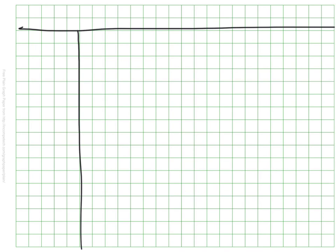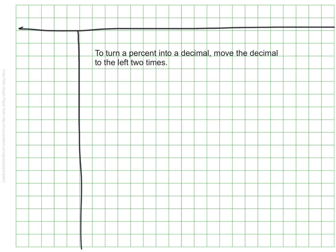Since we are talking about converting between decimals and percents, we'll make sure we can do it in the opposite direction — turning a percent into a decimal. To turn a percent into a decimal, we go the opposite direction: we move the decimal to the left two times. This has the effect of dividing by 100.